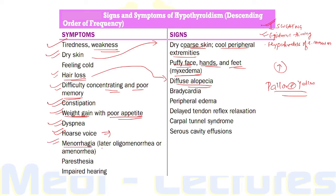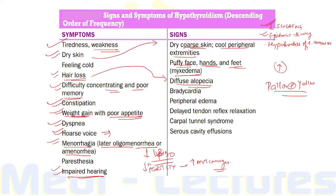Females can have menorrhagia and later oligomenorrhea or amenorrhea. There is decreased libido in both sexes and decreased fertility with increased risk of miscarriages. Impaired hearing can occur due to conductive deafness from fluid accumulation in the middle ear. Fluid accumulation can also occur in other serous cavities causing pericardial or pleural effusion. On clinical examination patients typically have bradycardia, diastolic hypertension, peripheral edema, delayed deep tendon relaxation, and carpal tunnel syndrome.